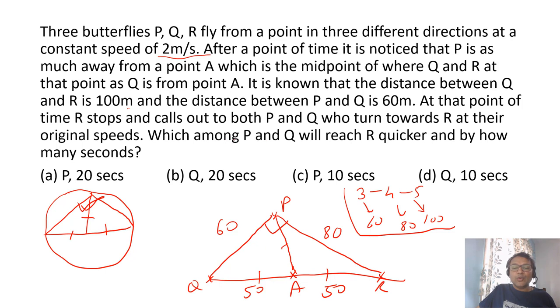So we get this diagram. Now both P and Q will reach R. So P takes how much time? P will take time 80 upon 2 meters per second, which is 40 seconds. Distance upon speed. And Q will take 100 upon 2, 50 seconds. So we can make out that P will reach quicker and he will reach by 10 seconds quicker than Q. It's C option.